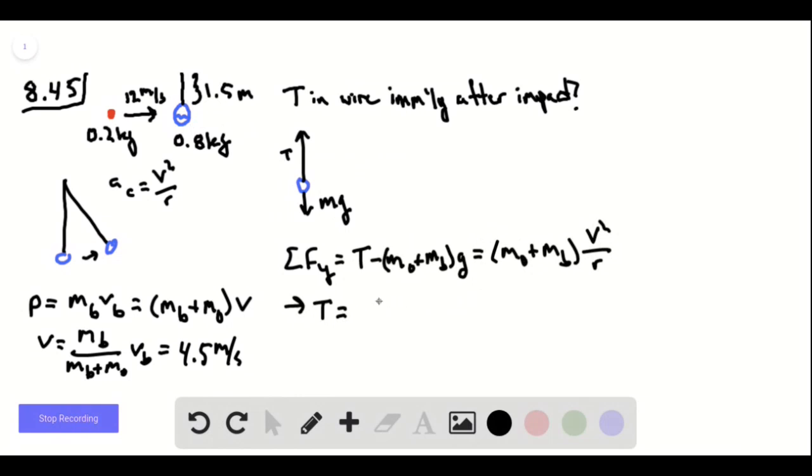And so the tension in the wire is going to be the mass of both ornament and bullet—and I've done that again when I start writing b instead of mb.